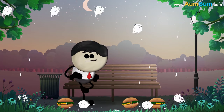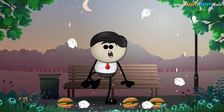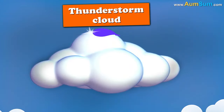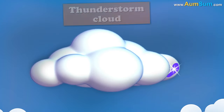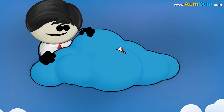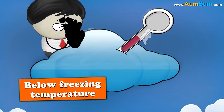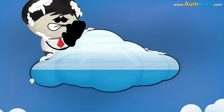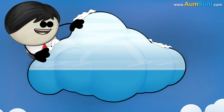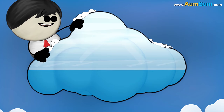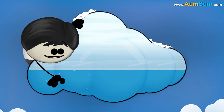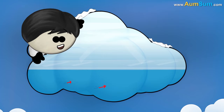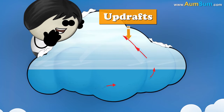For hail formation, the following conditions are necessary. Firstly, there must be a thunderstorm cloud. Secondly, the upper portion of the cloud should be below freezing temperature. Thirdly, the cloud should have a great vertical height. Fourthly, it should have high water content. Lastly, there must be strong uprising winds called updrafts.